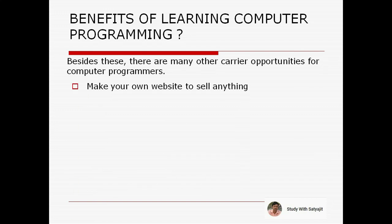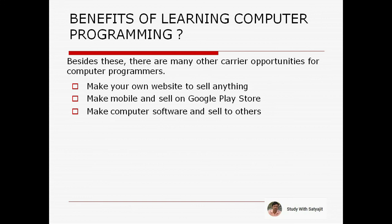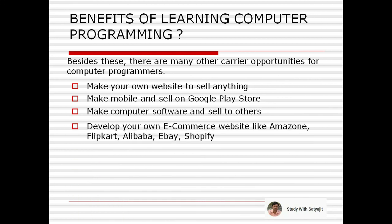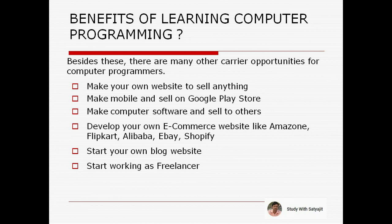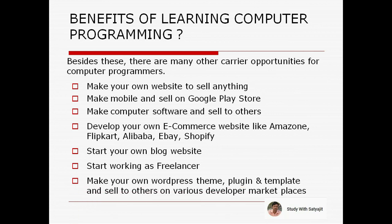You can make your own website to sell anything. You can make a mobile app and sell it on the Google Play Store. You can make computer software and sell it to others. You can develop your own e-commerce website like Amazon, Flipkart, Alibaba, eBay, or Shopify. You can start your own blog, work as a freelancer, or make your own WordPress themes, plugins, and templates and sell them on various developer marketplaces.